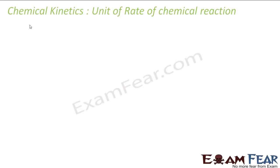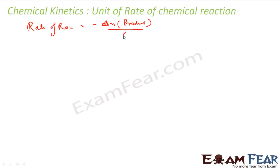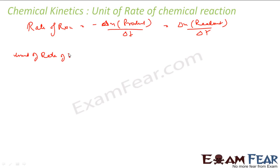The rate of reaction is either minus of change of concentration of product by time, or change of concentration of reactant by time. Now let's find the unit. The unit of concentration of product — concentration is always in moles per liter.